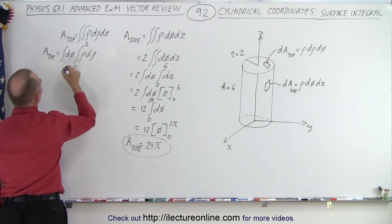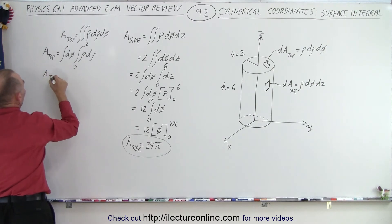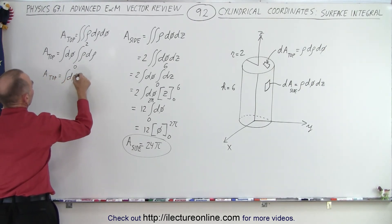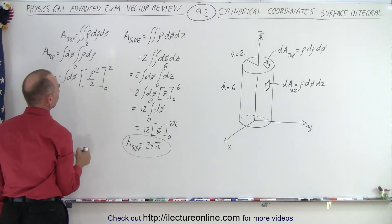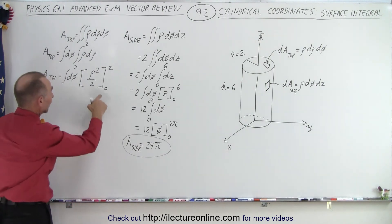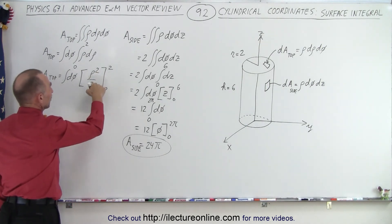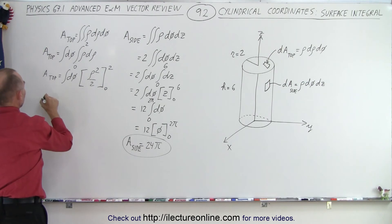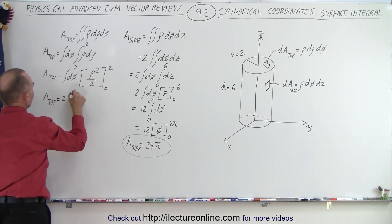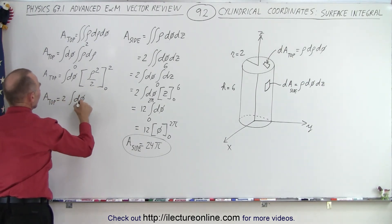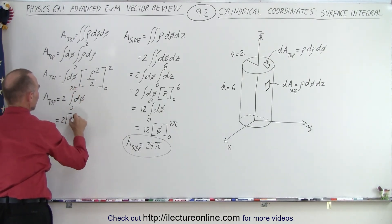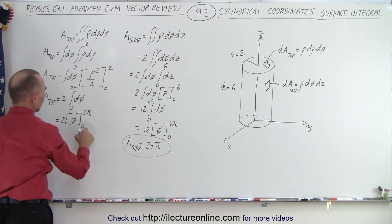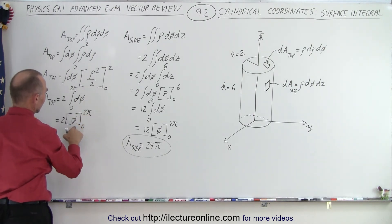The area on the top equals the integral of d-phi times the integral of rho times d-rho, with rho going from 0 to 2. This gives the integral of d-phi times rho-squared over 2 evaluated from 0 to 2. Plugging in the lower limit gives nothing; plugging in the upper limit gives 2-squared which is 4 divided by 2, which is 2. So the area at the top equals 2 times the integral of d-phi from 0 to 2pi, which gives 2 times 2pi equals 4pi.